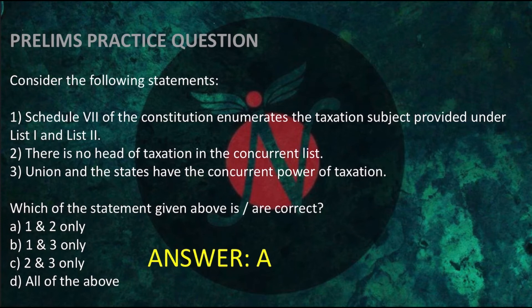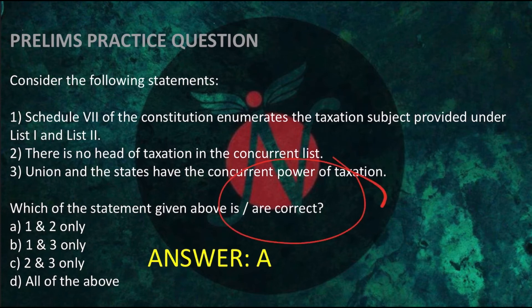The question we had today in the topic decodified session was: consider the following statements — 1) Schedule 7 of the constitution enumerates the taxation subjects provided under List 1 and List 2; 2) There is no head of taxation in the concurrent list; 3) Union and state have the concurrent power of taxation. The correct combination is A, 1 and 2 only. Statement 3 — that union and state have concurrent power of taxation — is incorrect.